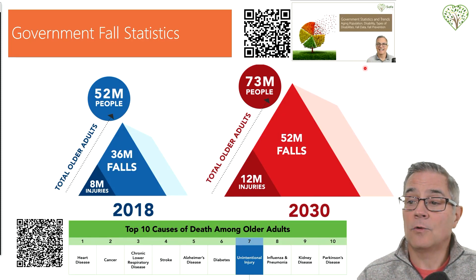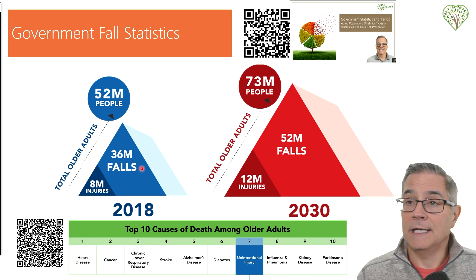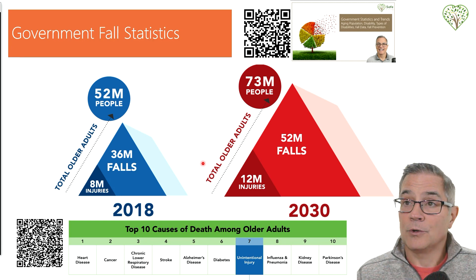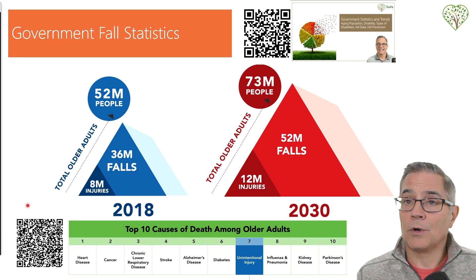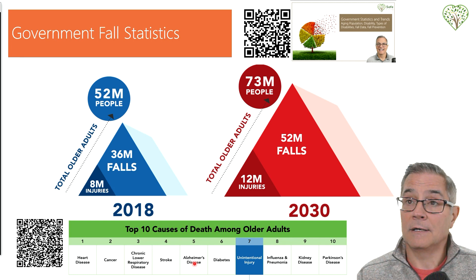I did a previous episode about government statistics and trends — you can use the QR code to access it. Looking at the government statistics, in 2018 there were an estimated 36 million falls and 88 million injuries. The CDC projects that will increase to 52 million falls or 12 million injuries. Another important point: if we look at the top 10 causes of death amongst older adults, number seven is unintentional injuries, and falls are the number one leading cause of death in that category.